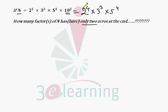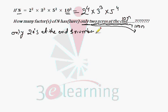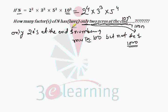Zeros at the end are nothing but multiples of 10. Two zeros at the end are nothing but multiples of 100. The meaning of exactly two zeros at the end signifies that the number is a multiple of 100 but not a multiple of 1000.